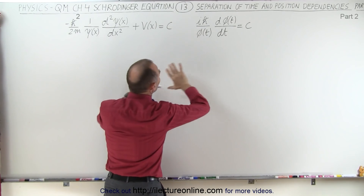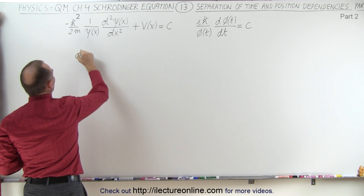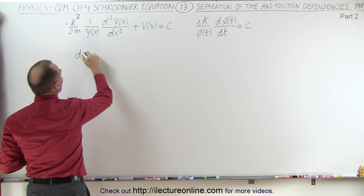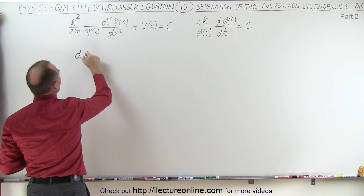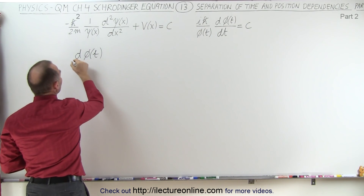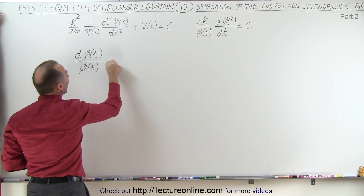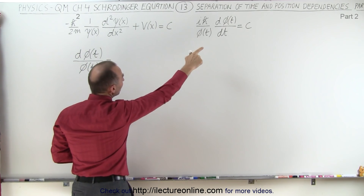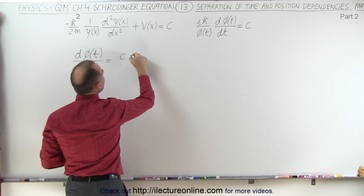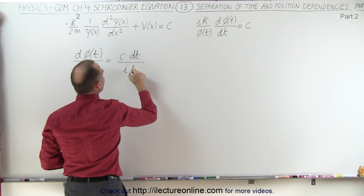So we're taking this equation and we're going to separate the variables. On the left side, we're going to end up with the derivative with respect to time — the differential with respect to time — of the wave equation, the part that only depends on time, divided by the wave equation which depends on time. On the right side, we're going to have c times dt divided by i and h-bar.